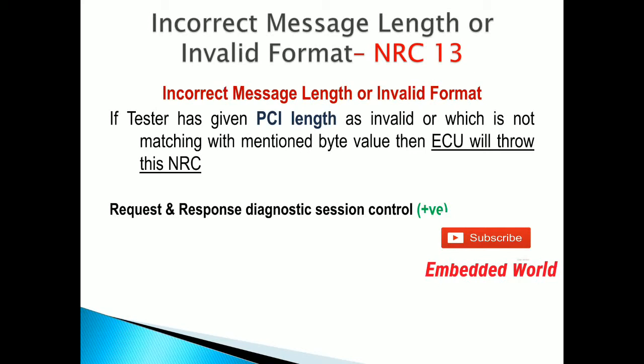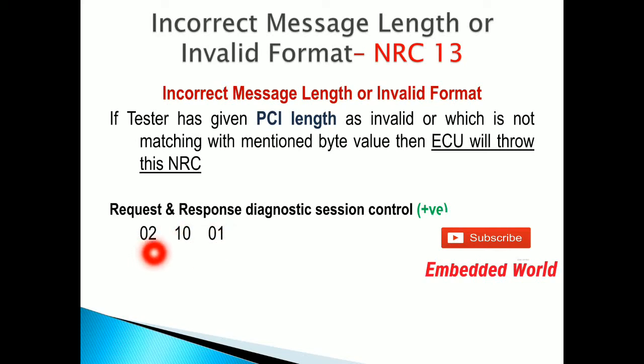Look at the positive response — you are very much familiar with diagnostic session control. Here the request is 00 02 10 01. So 02 is nothing but the PCI length. Many still have confusion on what is PCI length, so let's make it clear. PCI length is nothing but how many bytes you are using. Here, two bytes of data are being used, so the value 02 is the PCI length.